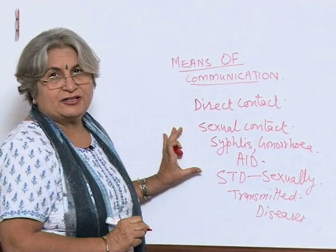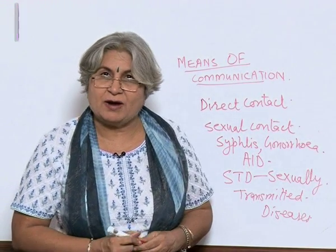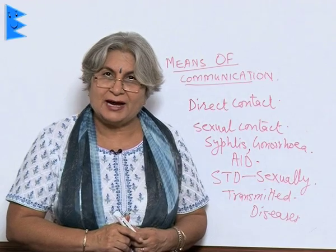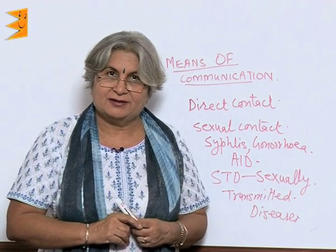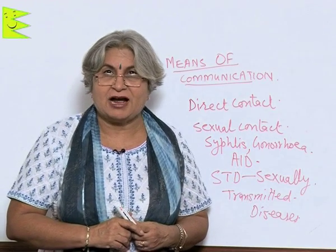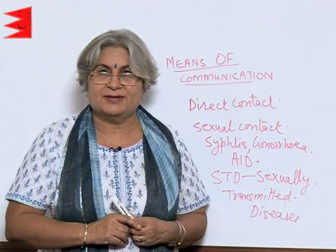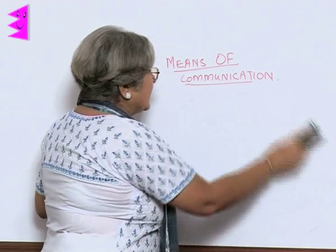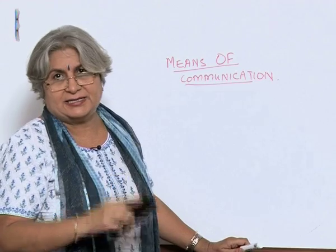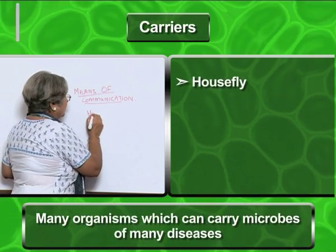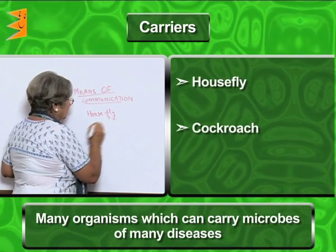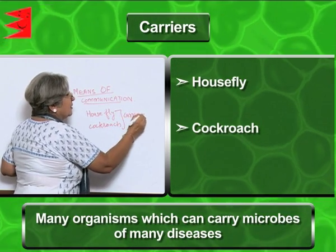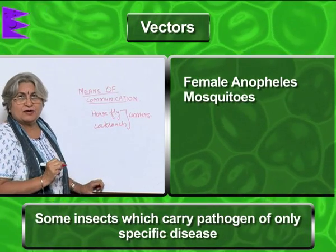Infectious diseases can spread in various ways. We are always advised that our food should be covered, there should be no heaps of garbage, and there should be no stagnant water, because there are some organisms — specially some insects — which are also means of spreading, like the house fly, mosquito, and cockroach. Some of these organisms can carry microbes of many diseases; for example, a house fly or a cockroach. They are called carriers.